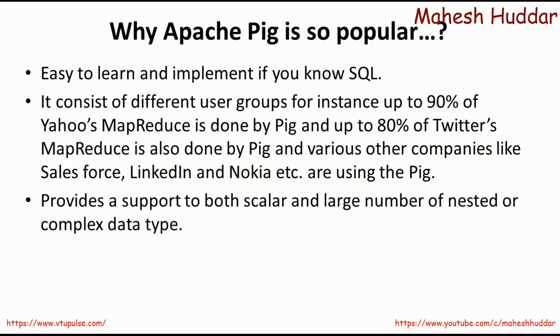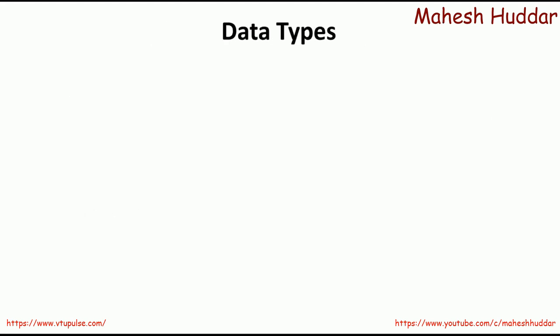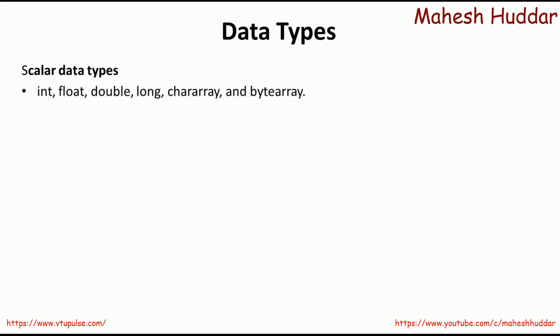Apache Pig provides support for both scalar as well as a large number of complex data types. First, we will see what are the different data types it supports. The scalar data types are int, float, double, long, char array, and byte array. These are all the scalar data types Apache Pig provides.